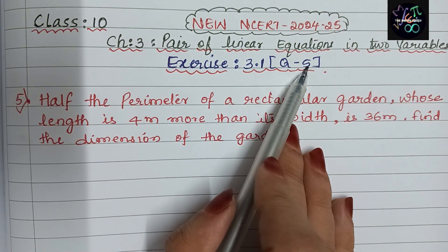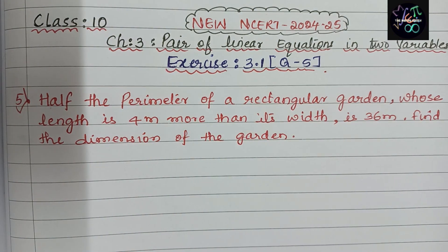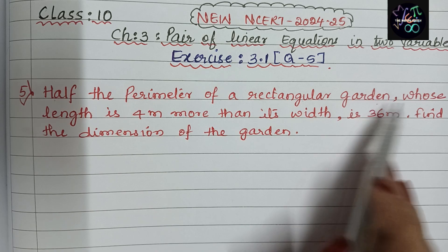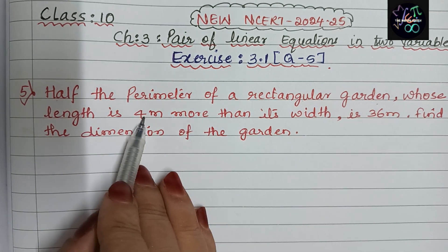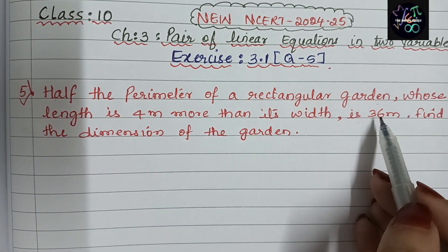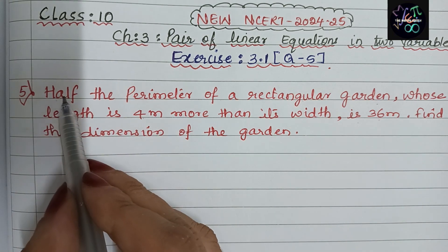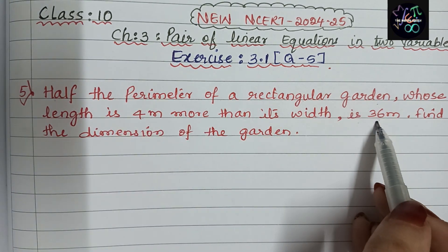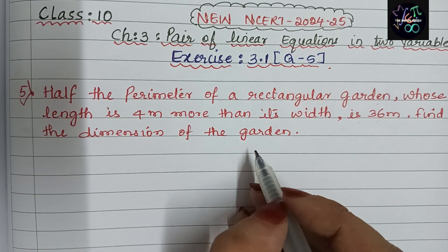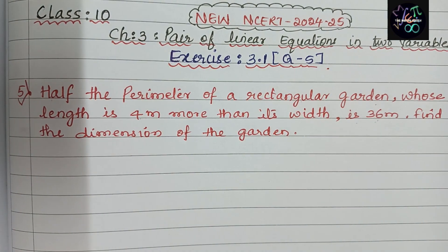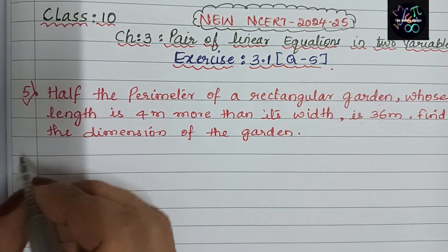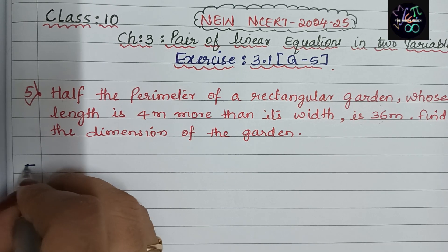Let us see the question. Half the perimeter of a rectangular garden, whose length is 4 meters more than its width, is 36. That means the half perimeter of the garden is 36. We need to find the dimensions of the garden. This problem is from the graphical method exercise, so let us solve it by the graphical method.